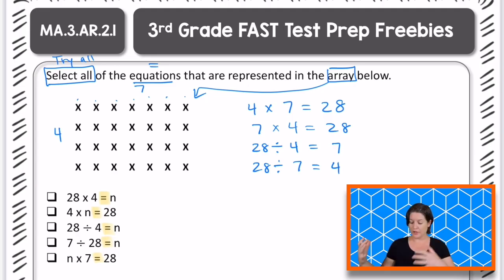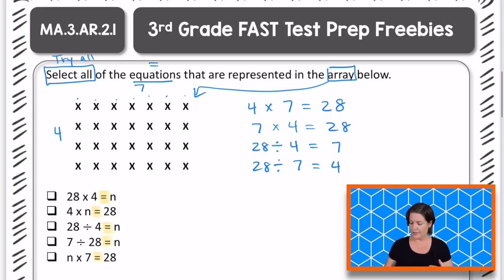All right. Now we have all of our equations that are represented. Let's go over here and match them up. So for the first one, it says 28 times 4 equals n. Do we have 28 rows or 28 columns? No, we have 28 total amount. So this one right here, the 28 is in the wrong place right there. So we can eliminate the first choice.